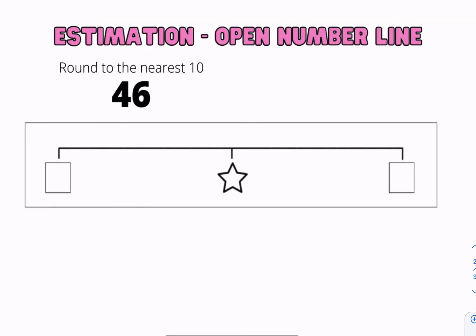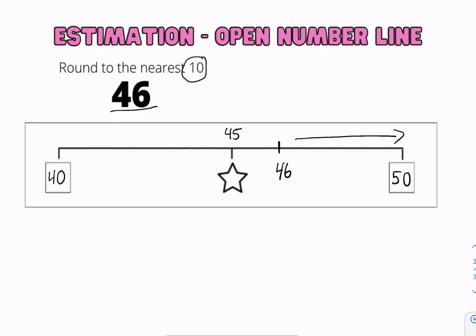This is an open number line strategy. We have the example: round to the nearest 10, the number 46. We know it's between 40 and 50, and our midpoint is 45. You're going to try to find where 46 lies, and anything after the star always rounds up. So 46 rounds to 50.